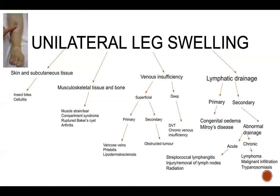Any condition or procedure that can damage the lymphatic system — whether lymph nodes or lymph vessels — can cause secondary lymphedema. This includes surgery, radiation therapy for cancer, cancer itself, and infection. Factors that may increase the risk of developing lymphedema include old age, excess weight, and rheumatoid or psoriatic arthritis. All of these potential causes can guide you to specific questions to ask the patient and signs to look for.